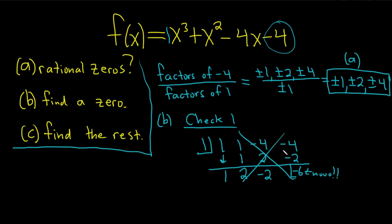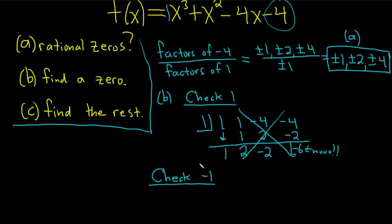So let's try a different number. Let's try negative 1. So let's check. You want to keep doing this until you get 0 as a remainder.